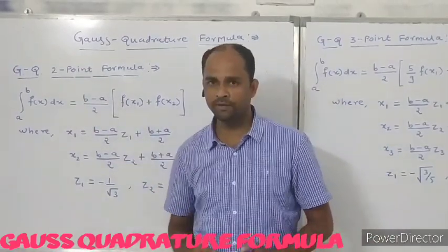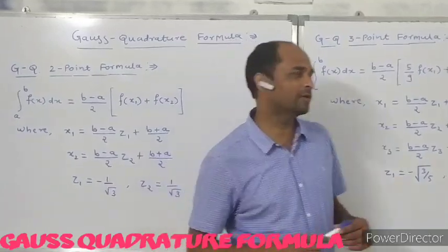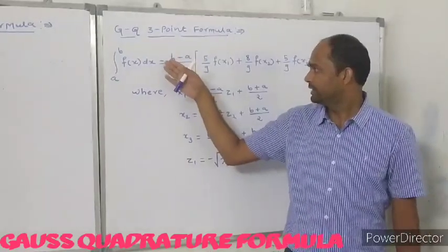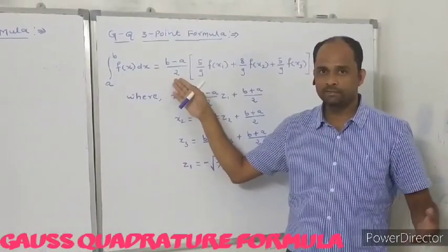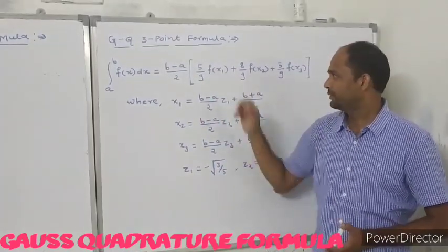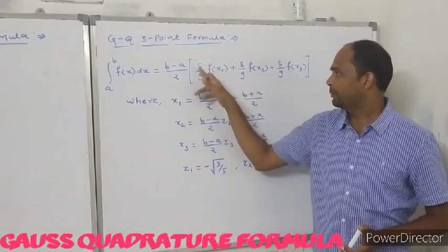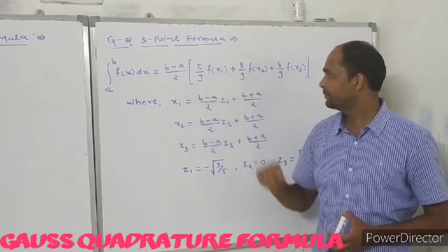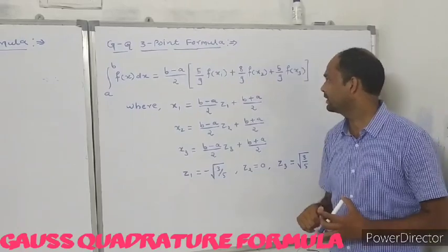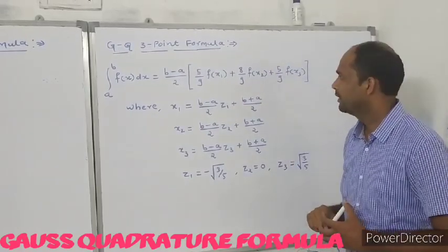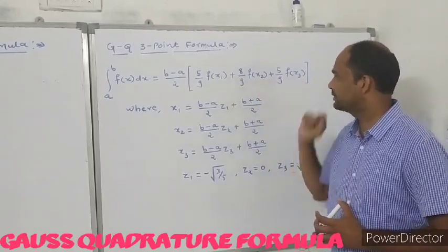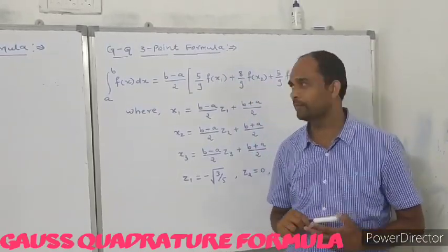This is the Gauss Quadrature 2-point formula. Now we see the Gauss Quadrature 3-point formula. It also has (b minus a) upon 2, just like in the 2-point formula, but there are three terms in the bracket: (5/9) into f(x1), plus (8/9) into f(x2), plus (5/9) into f(x3). There are three points x1, x2, and x3, that is why it is called the Gauss Quadrature 3-point formula.